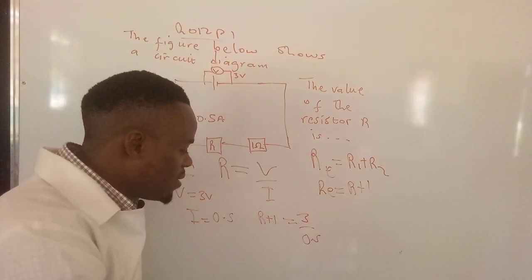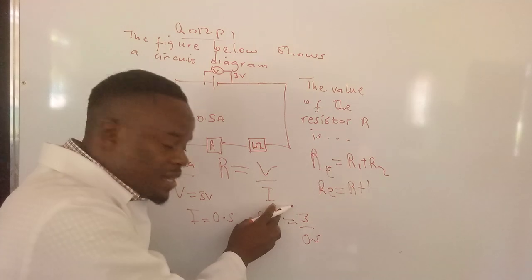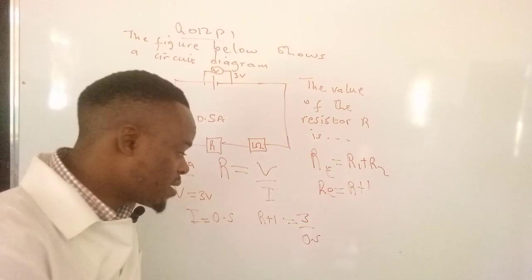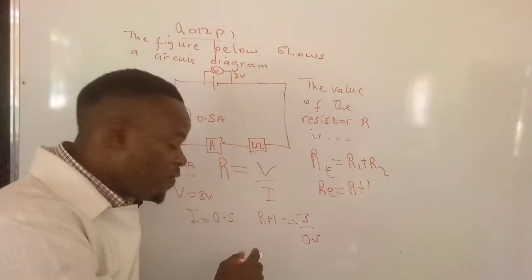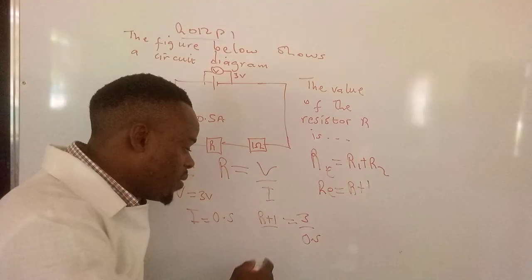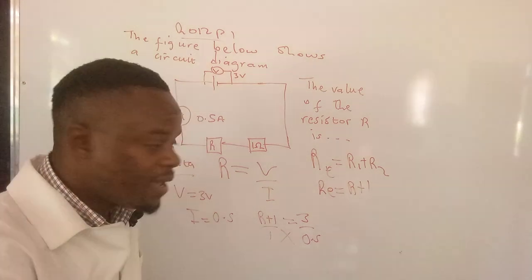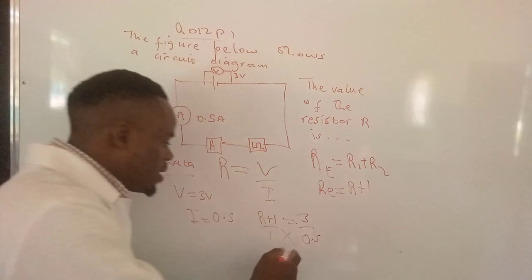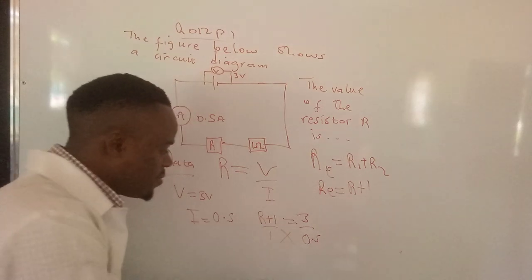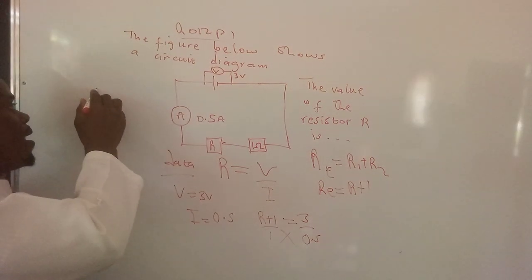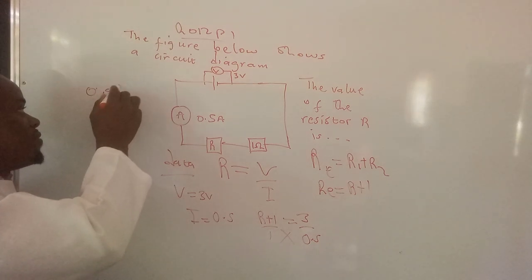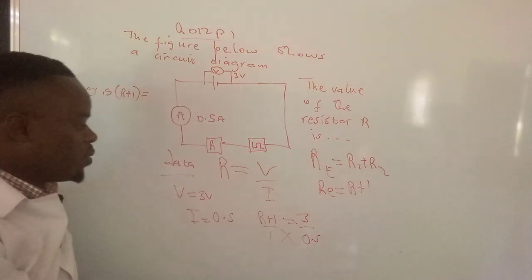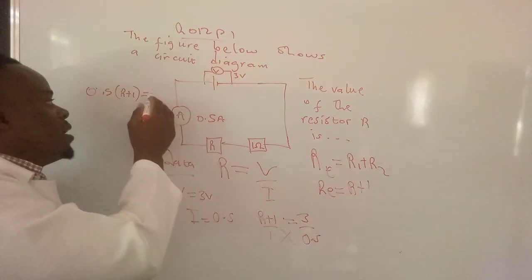So now what we have is a fraction on this side, and then we have these terms on the left side of the equation. To get rid of the fractions, for you to solve for R, you have to introduce 1 over here and then you cross multiply. So later on, what we are going to end up with is this times that, which is 0.5 times (R plus 1), which is equal to 1 times 3. That's 3.